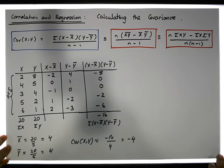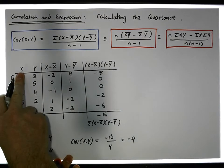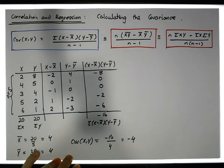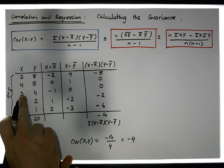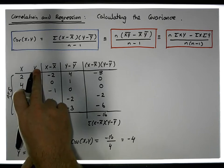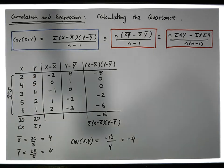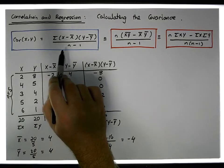This is telling us the directionality of the relationship. What it's saying is that there's a negative association between the independent and the dependent variable — in other words, as the independent observations grow larger, the dependent observations grow smaller. That's what negative association means. So there you go, that's the correlation calculation done for this particular case.